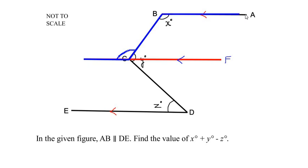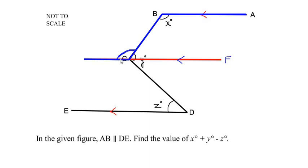Let me show you how it becomes the alternate angle. Taking these two parallel lines AB and CF, with CB acting as a transversal line, angle B and angle C become the alternate angles of these two parallel lines. Now CF is a straight line and BC acts as a line intercepting it, so this total angle is going to be 180°.